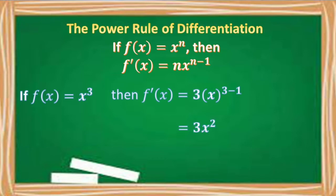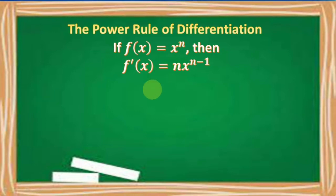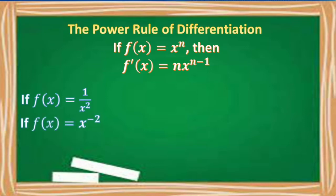Simplifying this further, we have 3x squared. If f of x is equal to 1 over x squared, this function must be written first in the form x raised to n. So we have f of x is equal to x raised to negative 2, applying the law of exponents: if the exponent is moved from numerator to denominator or from denominator to numerator, the sign of the exponent is changed.